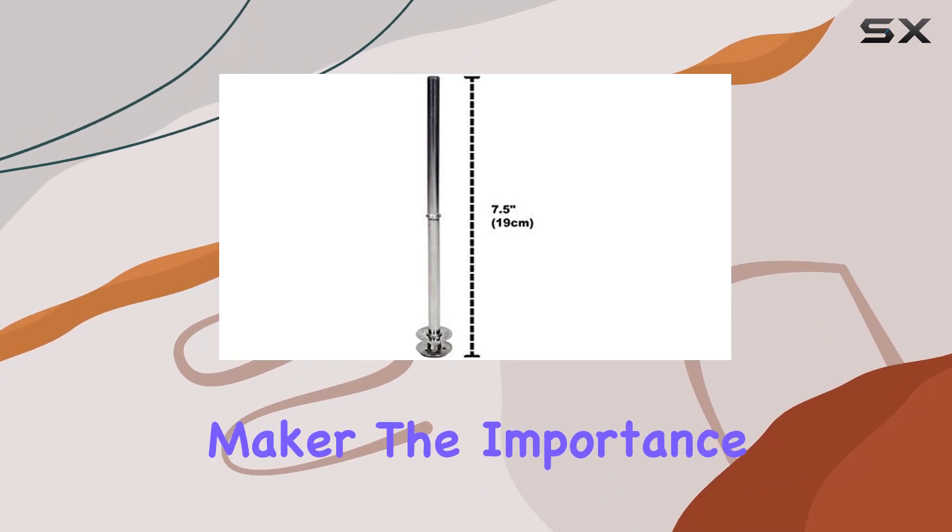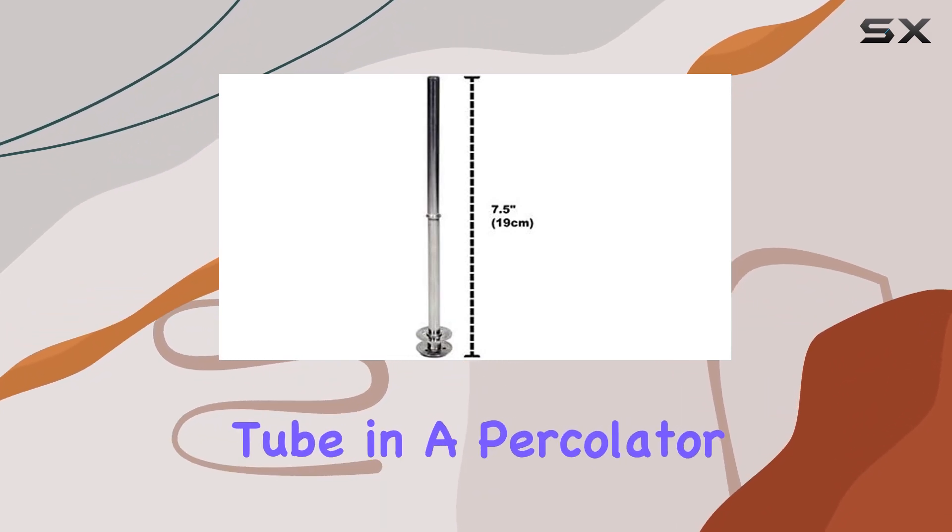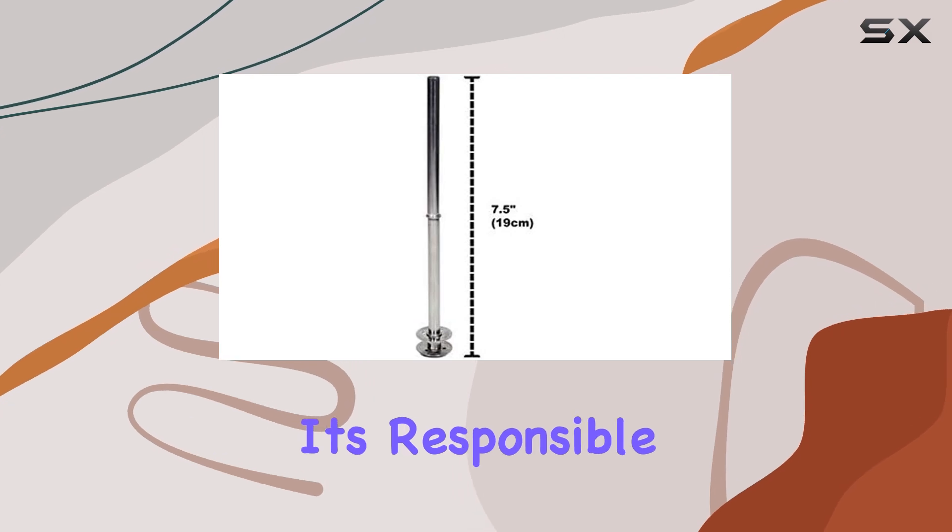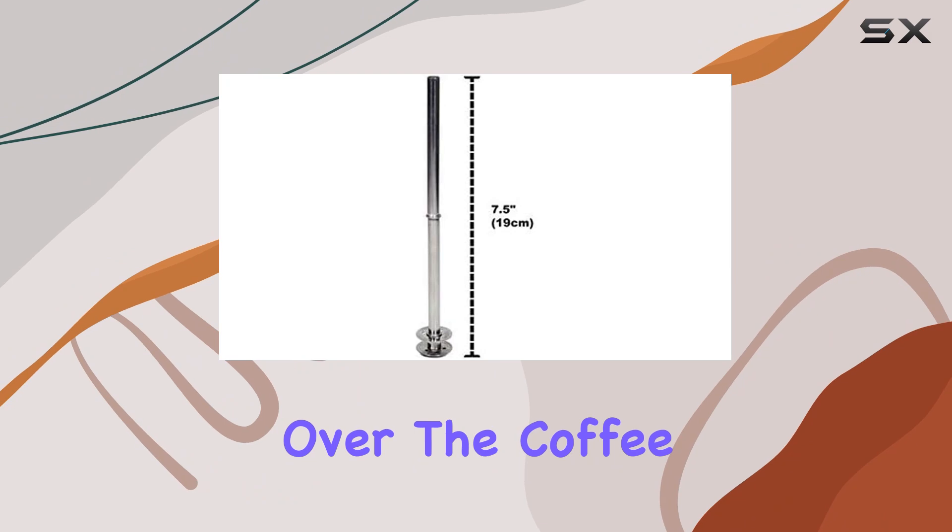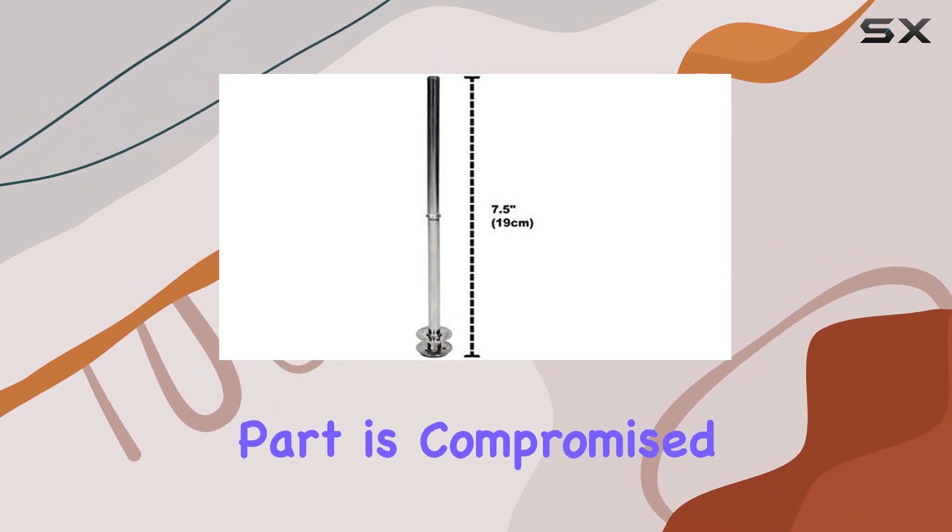If this part is compromised, you're left with weak, under-extracted coffee. That's why the Univine pump tube's robust build and design are so appreciated.